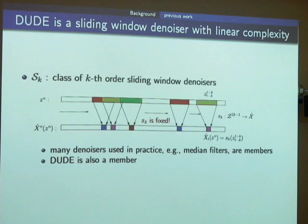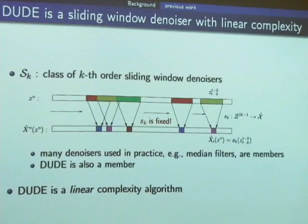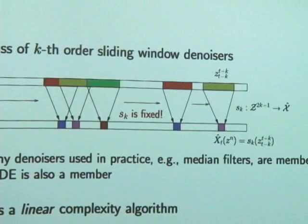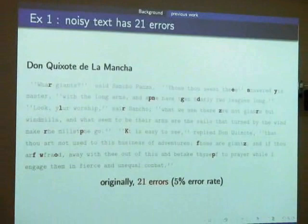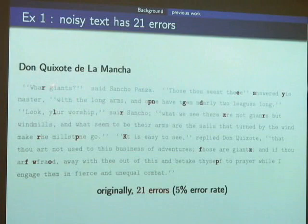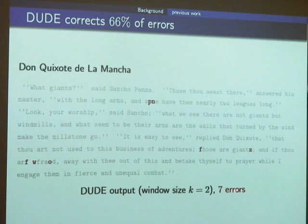DUDE is a linear complexity algorithm — it just needs to scan the whole document once, then do the denoising. For example, on a noisy version of Don Quixote with 21 errors originally, running DUDE reduces the error to 7, correcting 66% of errors. This is a strong result because DUDE doesn't know whether the text is English — it's not a dictionary-based scheme — yet it still corrects errors significantly.